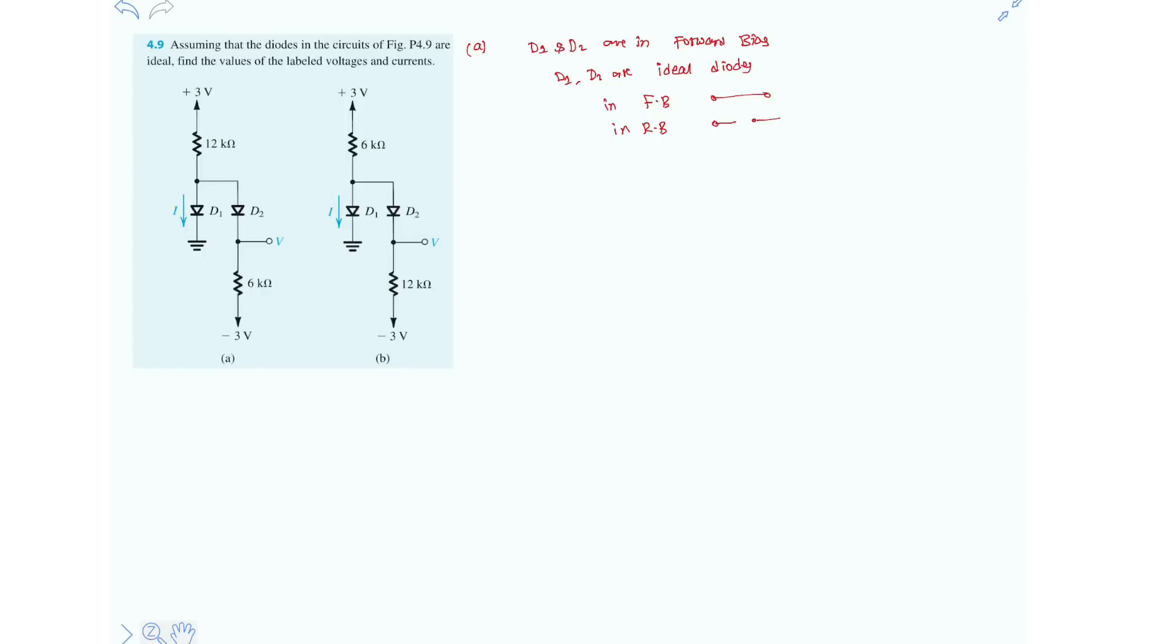So now our first assumption is that both diode D1 and D2 are in forward bias. Let's draw the simplified circuit diagram now. Here both the diodes are replaced with short circuit.